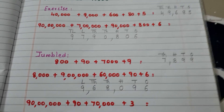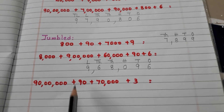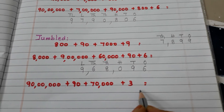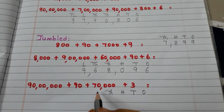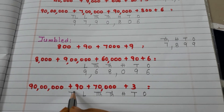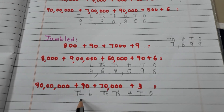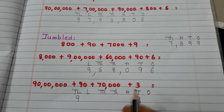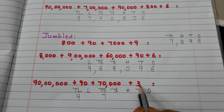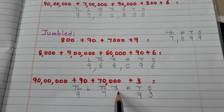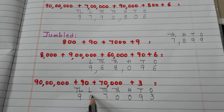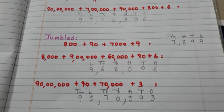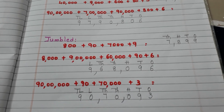Let us go to the last example. Check for the highest number of zeros — six zeros means we have the number till ten lakhs. 90 lakhs — in the ten lakhs place write 9. 70 thousands — in the ten thousands place write 7. 90 — in the tens place write 9. 3 ones — in the ones place write 3. For lakhs, thousands, and hundreds places write 0. The number is 90,70,093.